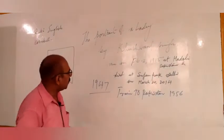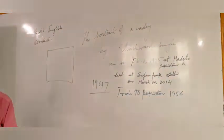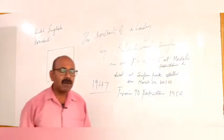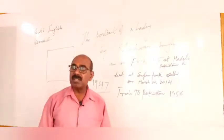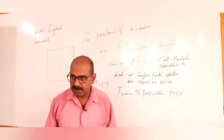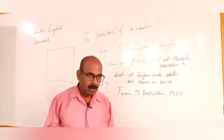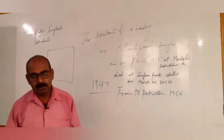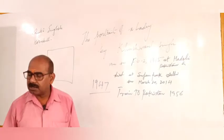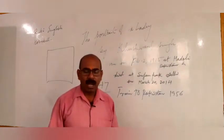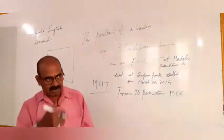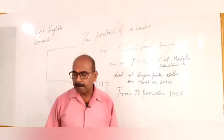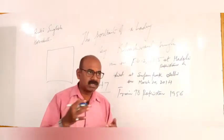Actually, in this chapter 'The Portrait of a Lady,' we do not see the portrait of his grandmother. We see the portrait of his grandfather — that is the live figure of his grandmother. His grandfather was no more. From his little age up to his youth, he had seen his grandmother and found how his grandmother was. He has described about his grandmother's nature, the way of living, how she was controlling the house, how she was interfering.